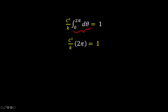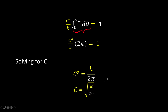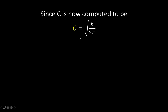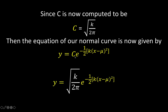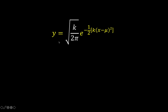Solving now for C, we have C squared equals k over 2 pi, and finally C equals plus or minus the square root of k over 2 pi. But we want the area to be positive 1, so we take the positive value. Since the constant equals the square root of k over 2 pi, the equation of our normal curve is now given by this equation. The original equation with C replaced by this constant gives us our equation for the normal distribution.